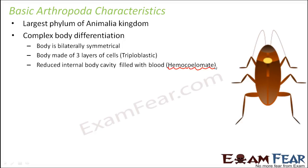Haemocoelom means the body cavity has a true coelom but it is filled with blood. Organisms belonging to Arthropoda do not have blood vessels — blood inside their body does not flow through specific tube-like structures. Instead, the entire body cavity is filled with blood and the organs are, in a sense, floating or bathing in blood. That is why they are said to be haemocoelmate.